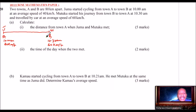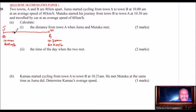When you have it displayed like that, it is easier to work out what is required. You can see that Juma started 30 minutes earlier than Mutuku. So it means at 10:30, Juma had already covered a certain distance, which we can calculate — that is 30 minutes of travel.